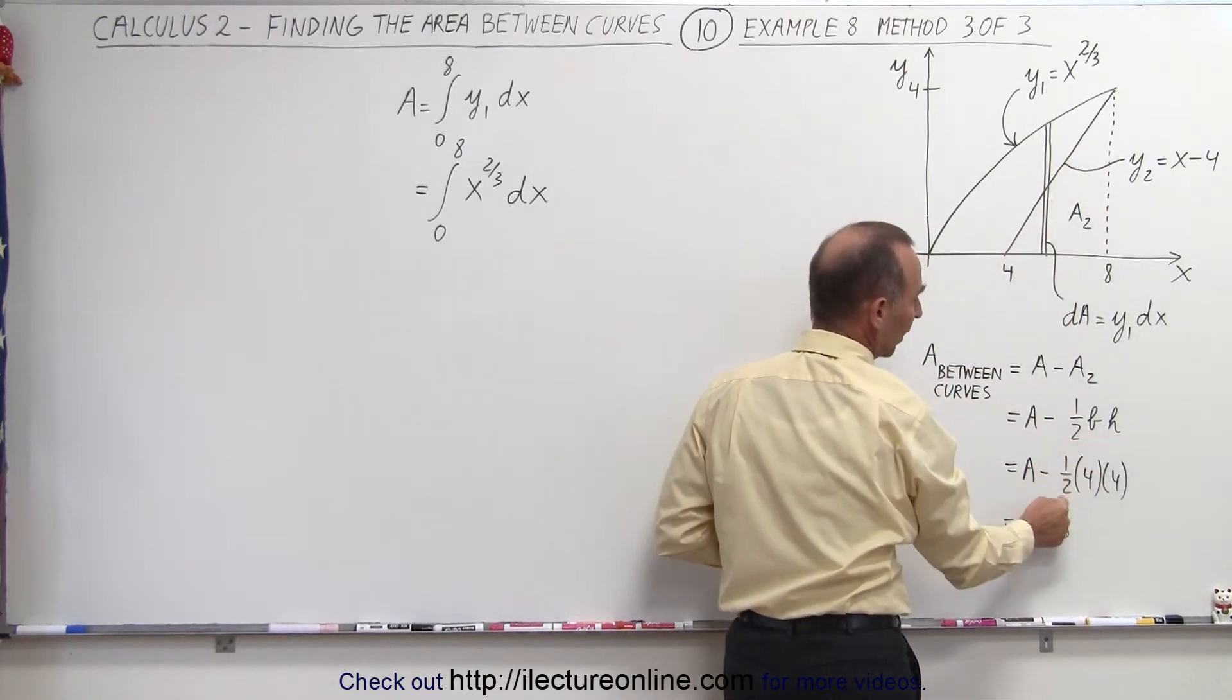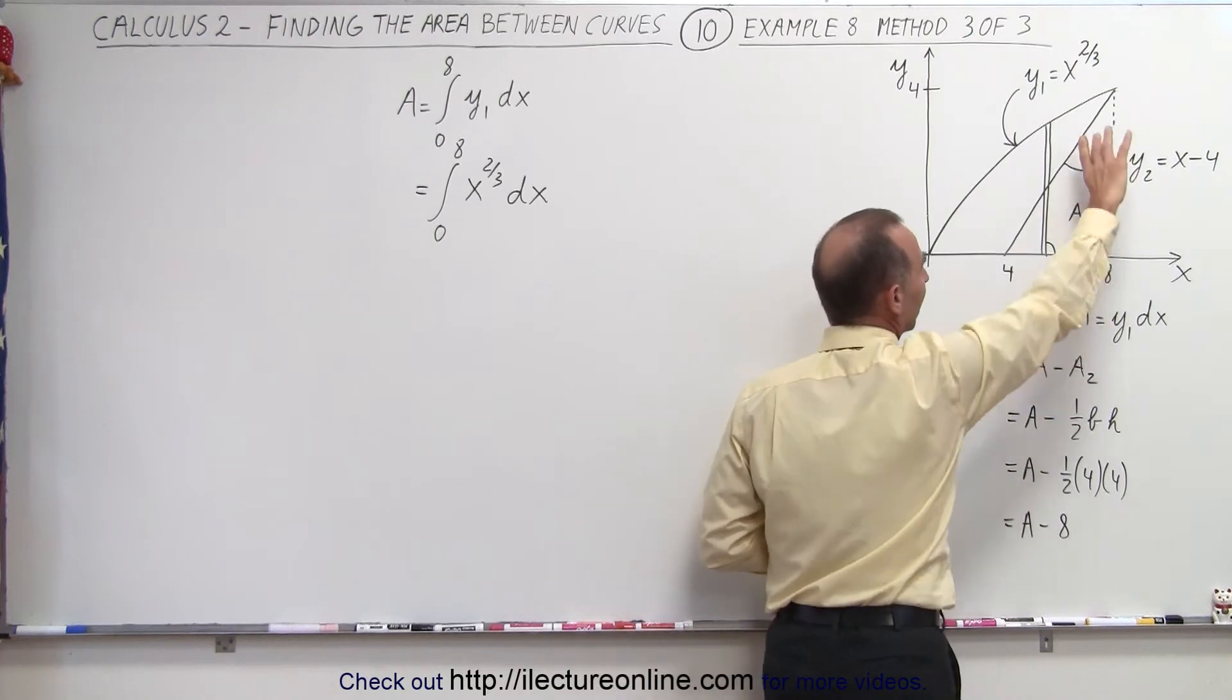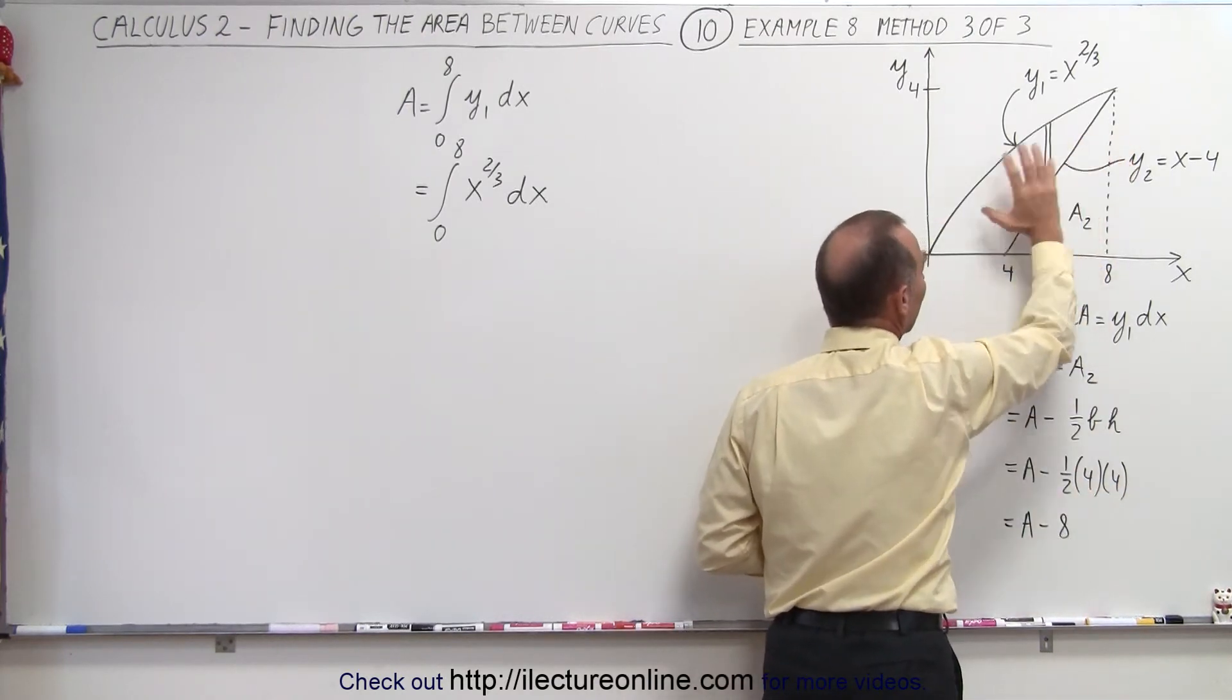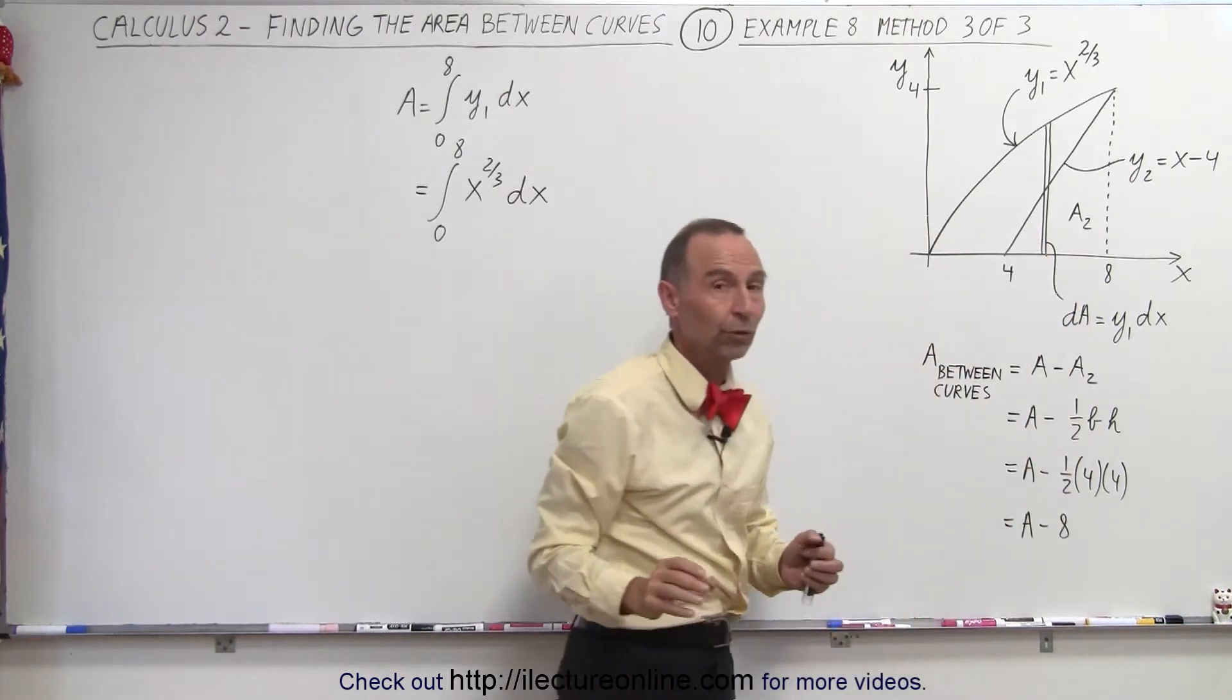Which is one half the base times the height, so one half the base which is four times the height which is four, so we subtract eight from the total area and we'll get the area between the two curves.